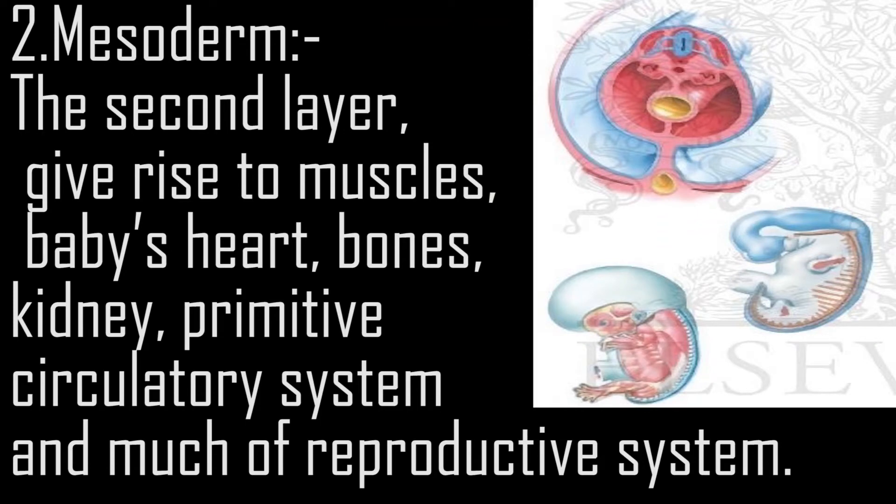2. Mesoderm — the second layer — gives rise to muscles, the baby's heart, bones, kidney, primitive circulatory system, and much of the reproductive system.